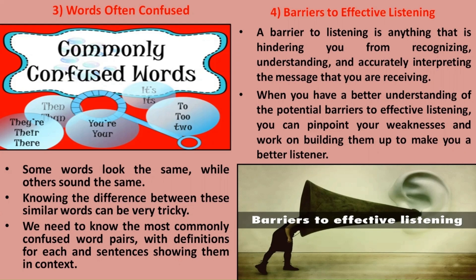The next chapter is barriers to effective listening. Anything which hinders the process of understanding and accurately interpreting a message we are receiving is known as a barrier. There are different kinds of barriers to effective listening, and when we know what these barriers are, we can work on resolving these issues to improve our ability to comprehend information received from different quarters.